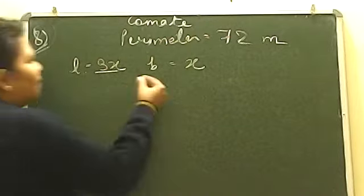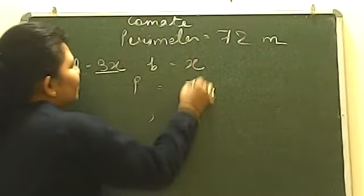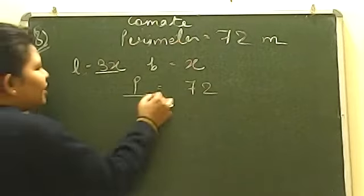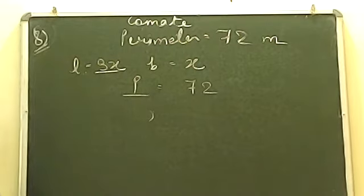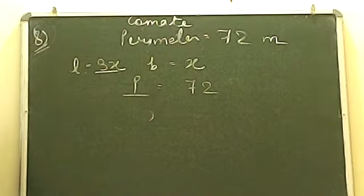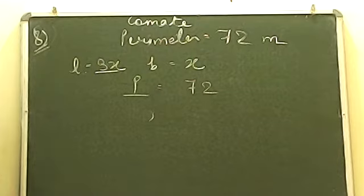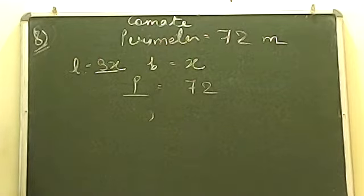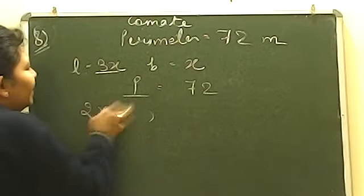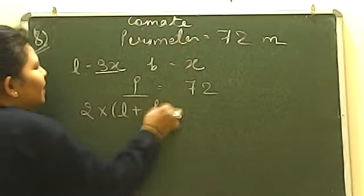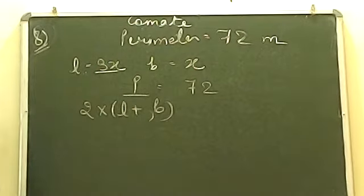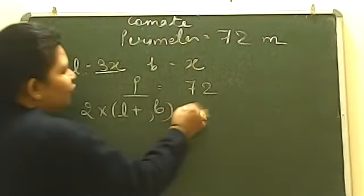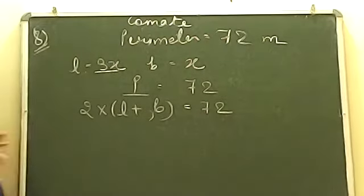Now comes the formula for perimeter. Perimeter is given as 72. The formula for perimeter of a rectangle is 2 into (length plus breadth). Absolutely correct — 2 into (length plus breadth) equals 72.